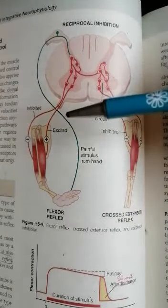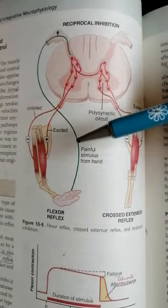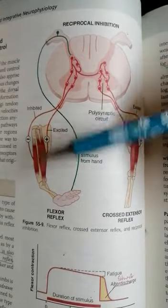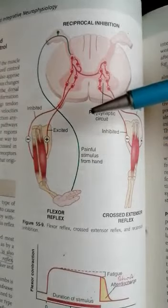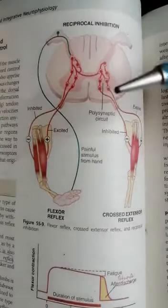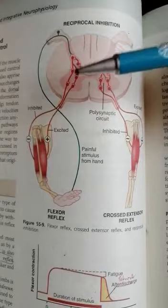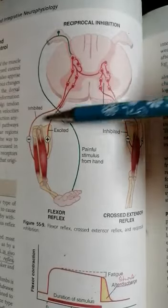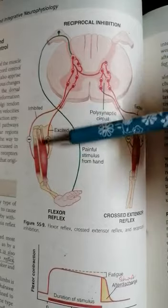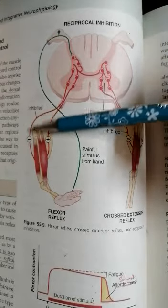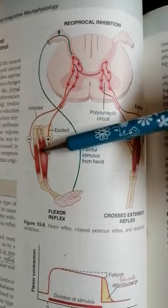Why is this called reciprocal inhibition? By definition, reciprocal inhibition is when a stretch reflex excites one muscle, there is simultaneous inhibition of the antagonistic muscle. When one muscle is excited, there will be a simultaneous inhibition of the antagonistic muscle to prevent reciprocal contraction of the antagonistic muscle and to strengthen the stretch.